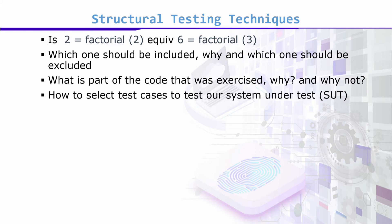While testing, we have to ask ourselves a couple of questions. For example, is factorial(2) equivalent to factorial(6)? Should I run both test cases, or will one test case be enough to test this kind of functionality? If one is enough, which one should be included — factorial(2) or factorial(3)? Why, and which one?